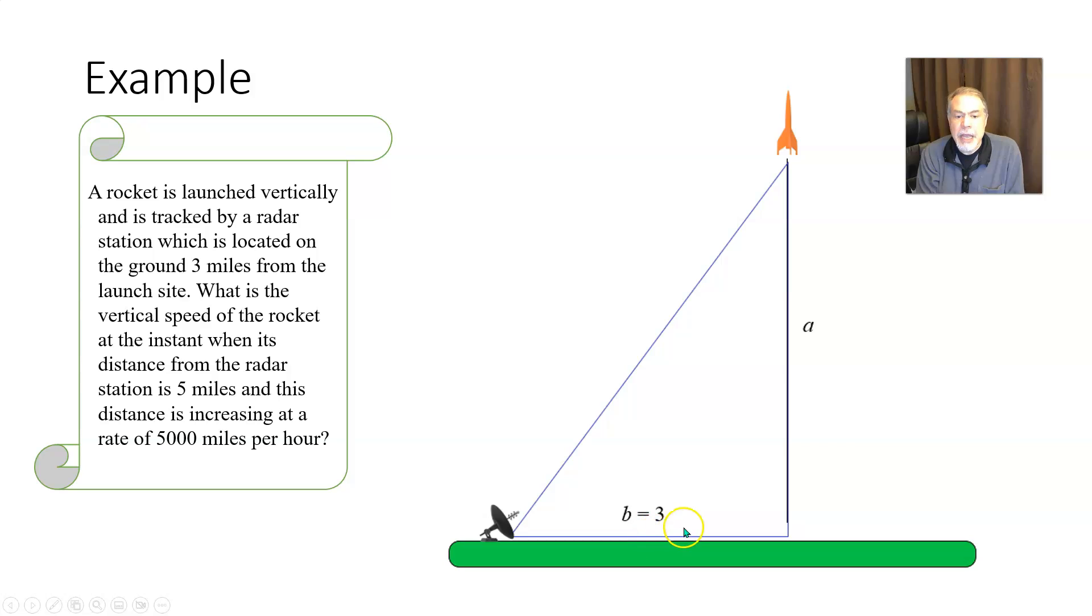The side along the bottom, I can call that b, but it's not changing. It's the three miles from the radar station to the launch site and that's not changing. No matter how far up in the air the rocket goes, it's always going to be three miles from here to here. But the third side, the hypotenuse of this triangle, is also changing. As the rocket gets higher and higher up, it's also getting farther and farther away from where the radar station is. So that's also changing and I'm going to label that c.